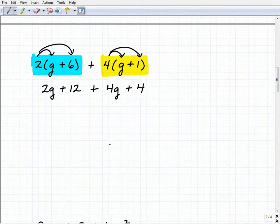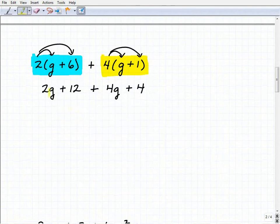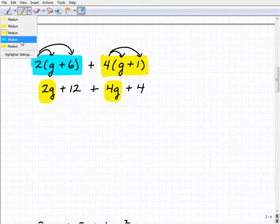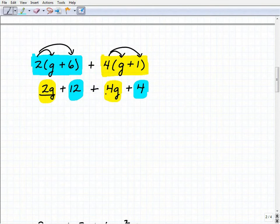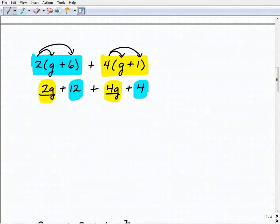Okay, so now taking a look at what we have, we have to determine whether we have like terms. All right, so we can see that 2g and 4g are like terms, and then our numbers here we can add them up. So go ahead and combine your like terms by adding those coefficients. 2g plus 4g is 6g.